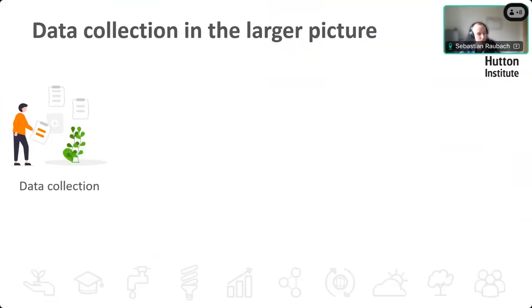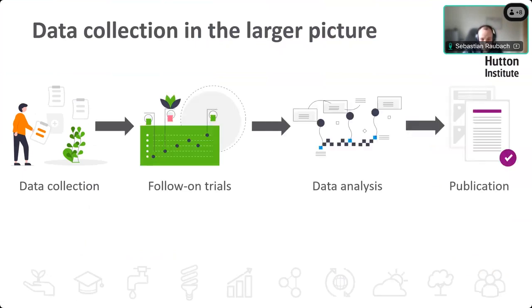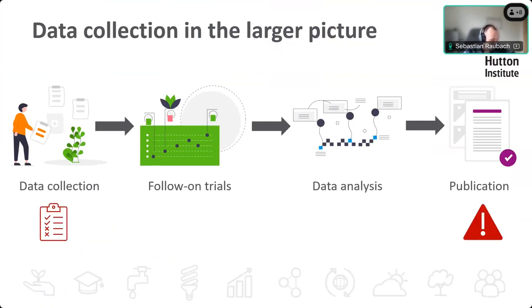We all know why data collection is important, particularly why the quality of the data being collected is important, because that data can make its way through follow-on trials and data analysis and might eventually end up in publications. If that data contains any errors, those will also propagate all the way through to your publication. Obviously, that's not something we want — we want our data to be as good as possible, as accurate and as complete as possible.